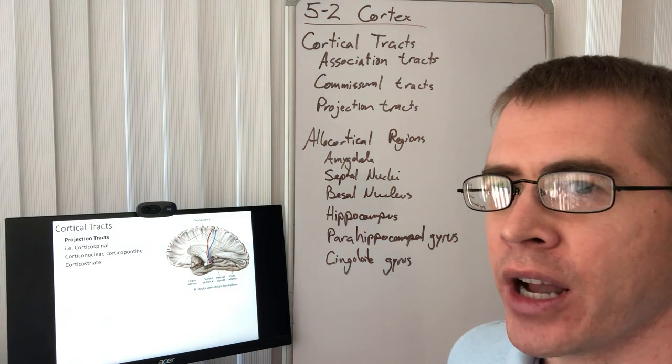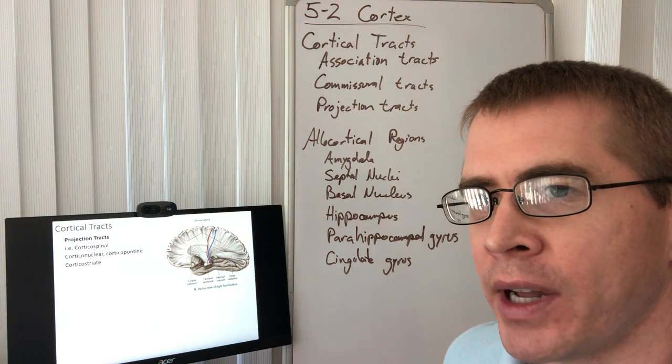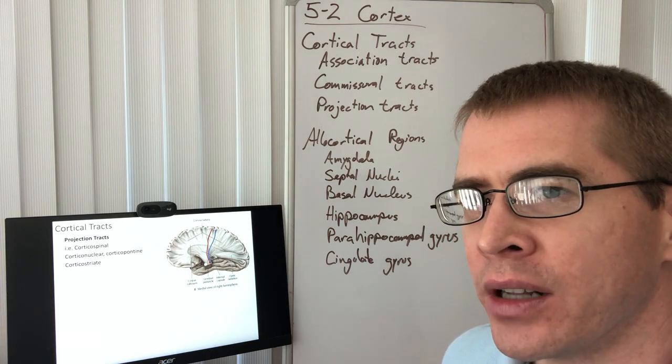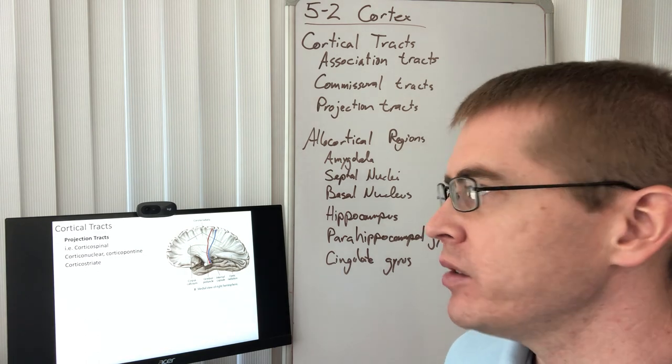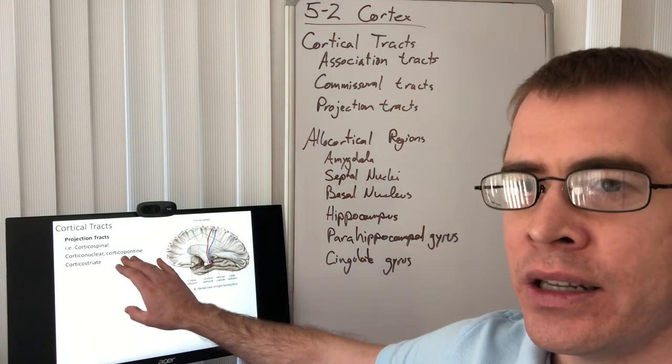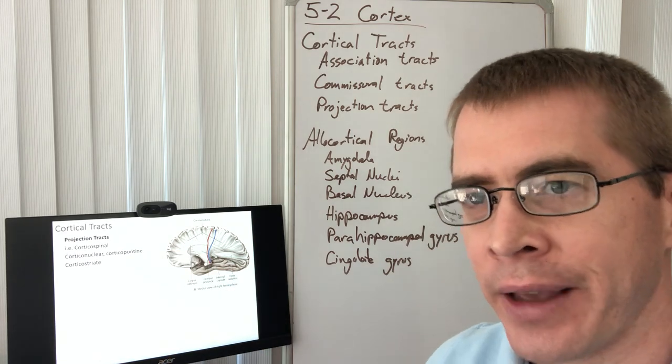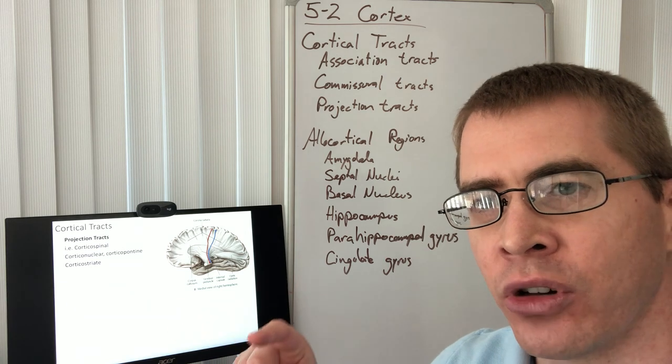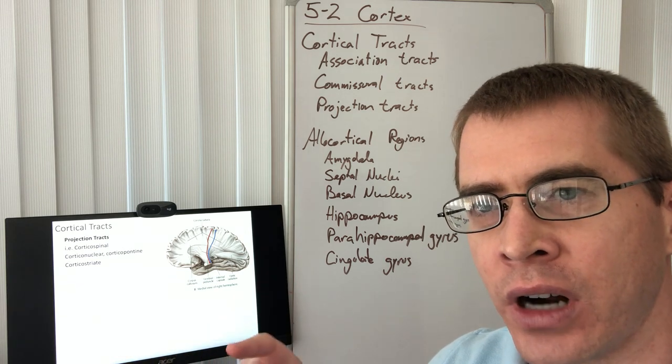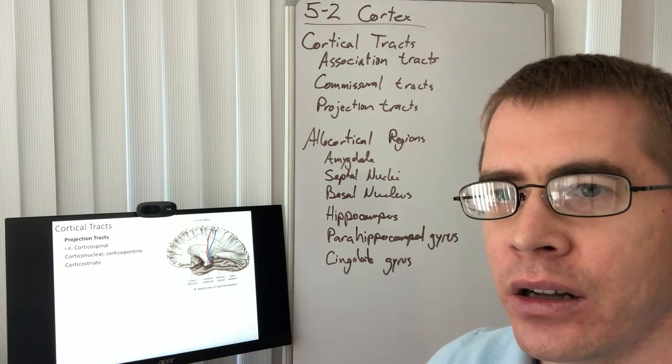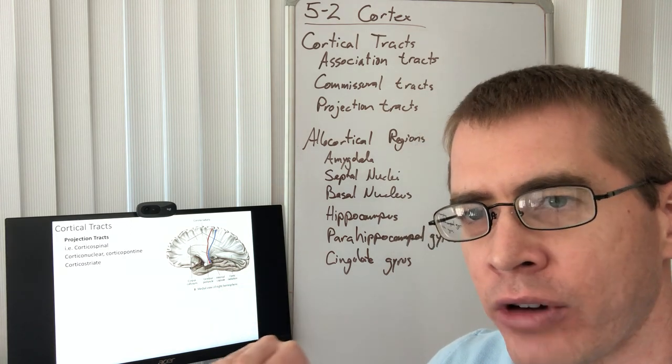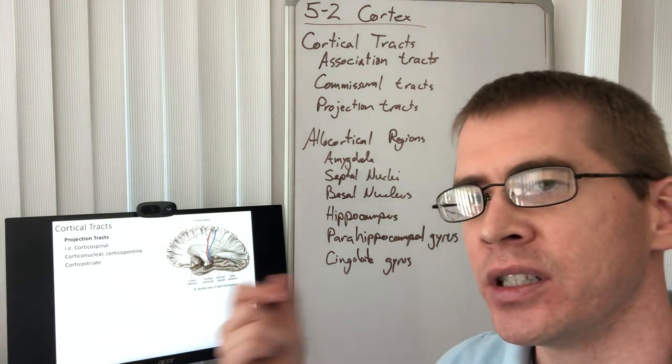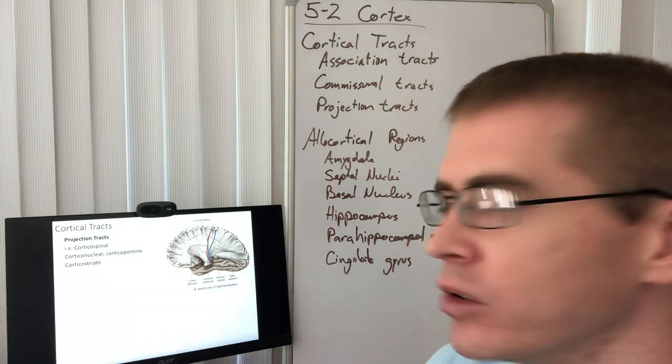And then, of course, we have projection tracts. These tracts are the corticospinal tracts going to the spinal cord, as well as the corticobulbar or corticopontine, sometimes called corticonuclear. These corticopontine are sending information to pontine nuclei. And these pontine nuclei are, for instance, facial motor nucleus or trigeminal motor nucleus. These are the lower motor neurons for the head. So just be aware that that tract has a different name because it has a different target. It's not going to the spinal cord. It's going to the pontine nuclei or the bulbar nuclei.